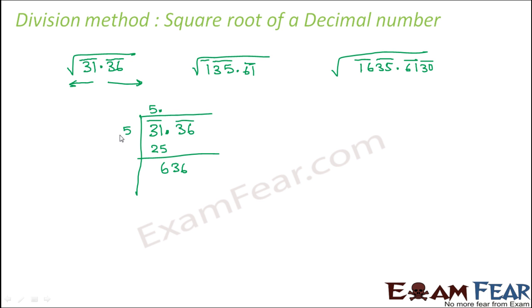What about the divisor? You make the divisor twice the initial divisor, that is 10, and you put a blank here. So what should be present in this blank such that when this is multiplied with the same digit, you get something which is less than or equal to 636. Let's try.